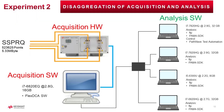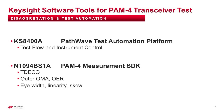In the second experiment, the same signals are acquired by a four-channel DCA-M connected to the same PC. In contrast to experiment 1, the waveforms are sent to four other PCs for analysis. Like in experiment 1, we are using the KS8400A PathWave Test Automation Platform for realizing the instrument control and test flow.